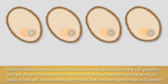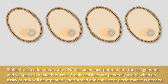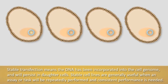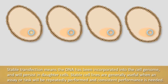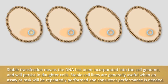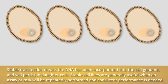Stable transfection means that the DNA has been incorporated into the cell genome and will persist in daughter cells. Stable cell lines are generally useful when an assay or task will be repeatedly performed, and consistent performance is needed.